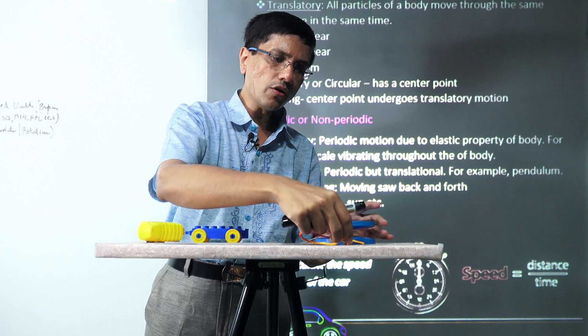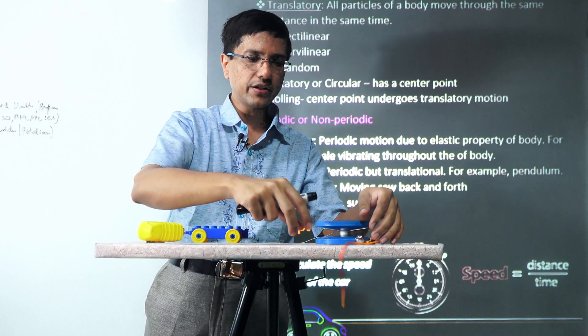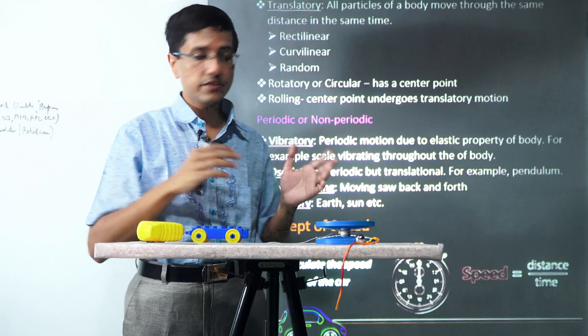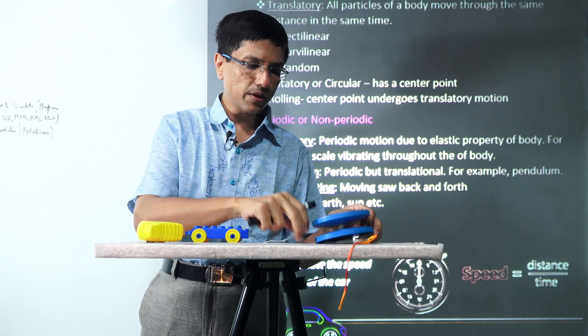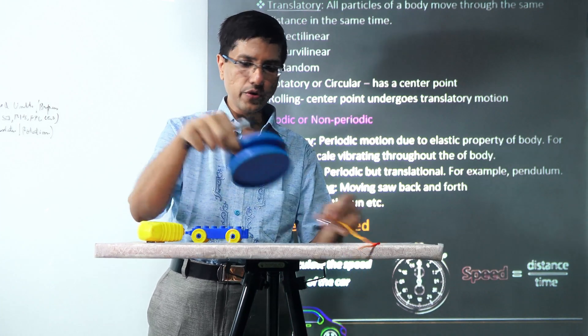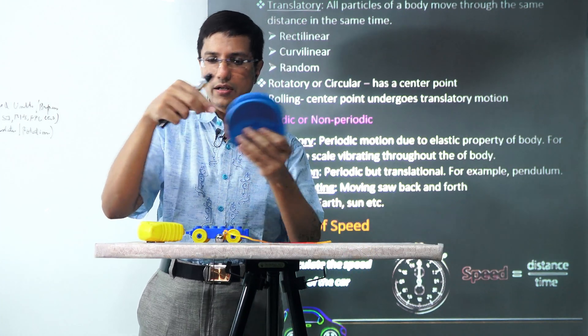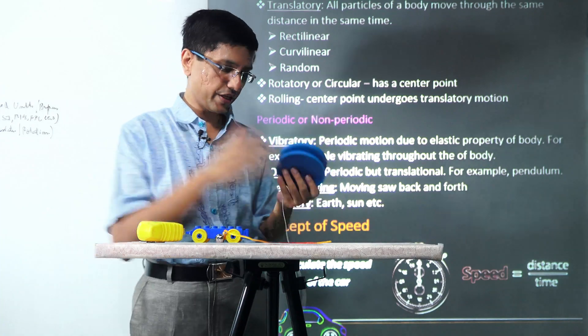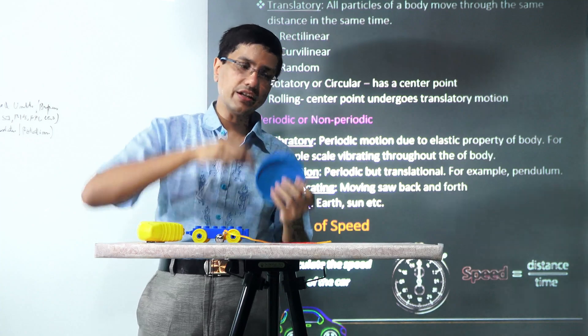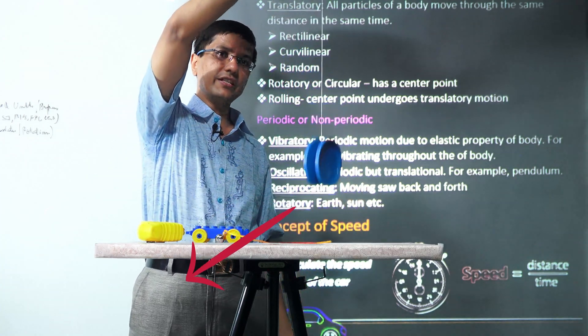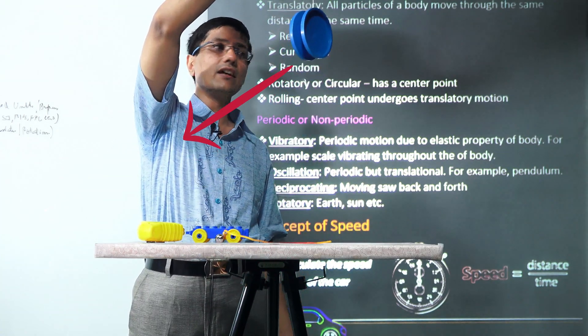Many motions can be created by combining these basic kinds of motions. For example, if you look at this yoyo, it exhibits two kinds of motion: one is rotation and the second is translation. The combination of these two motions is known as rolling motion.